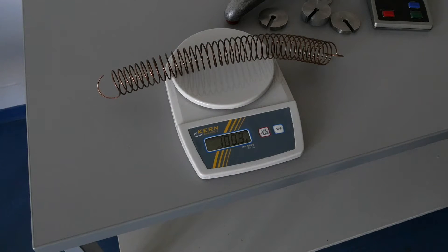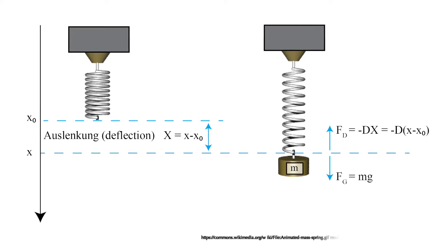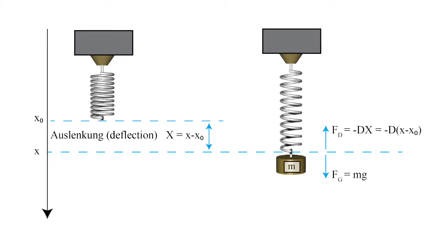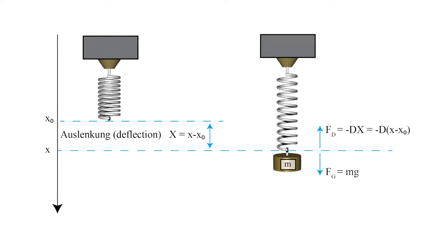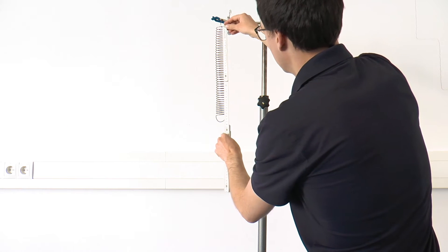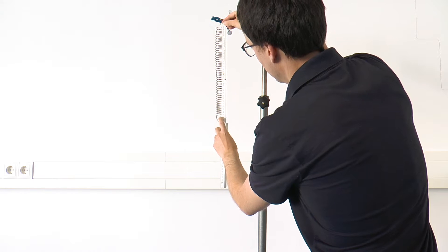The static method takes advantage of the fact that there is a balance of forces between the weight and the restoring force of the spring. We first measure the extension of the spring without any attached weights. We repeat this three times.